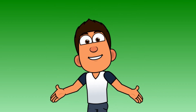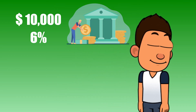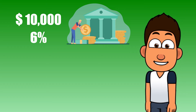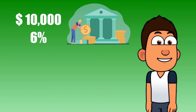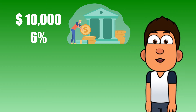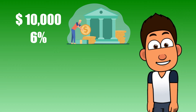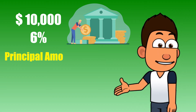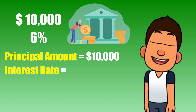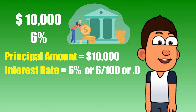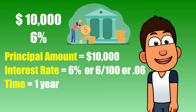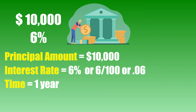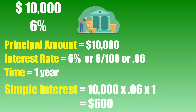Let's look at an example. You get a loan of $10,000 from the bank at a rate of 6%. How much would the simple interest be for the loan over one year? The principal amount is $10,000, the interest rate is 6%, or 6 over 100, which as a decimal is 0.06. So simple interest equals $10,000 times 6 divided by 100 times 1, which equals $600.